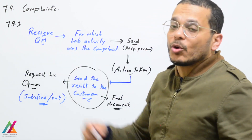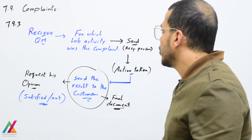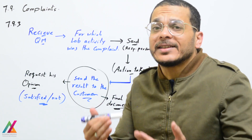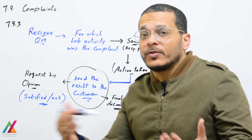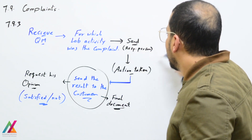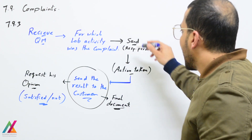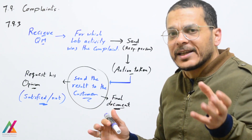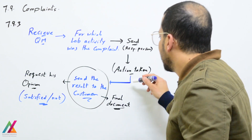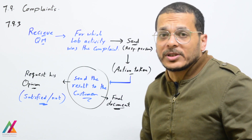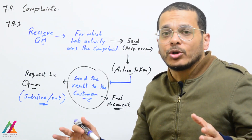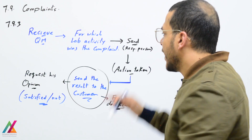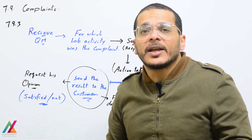The handling process flow: receive the complaint from the customer via the quality lead or quality manager. The quality lead decides which lab activity the complaint relates to, discusses it with the technical lead of the unit and the lab manager, then forwards it to the responsible person. The action taken by the responsible person shall also be approved by the technical lead and lab manager. The result is then sent to the customer, and the customer's opinion on whether they are satisfied shall be recorded.